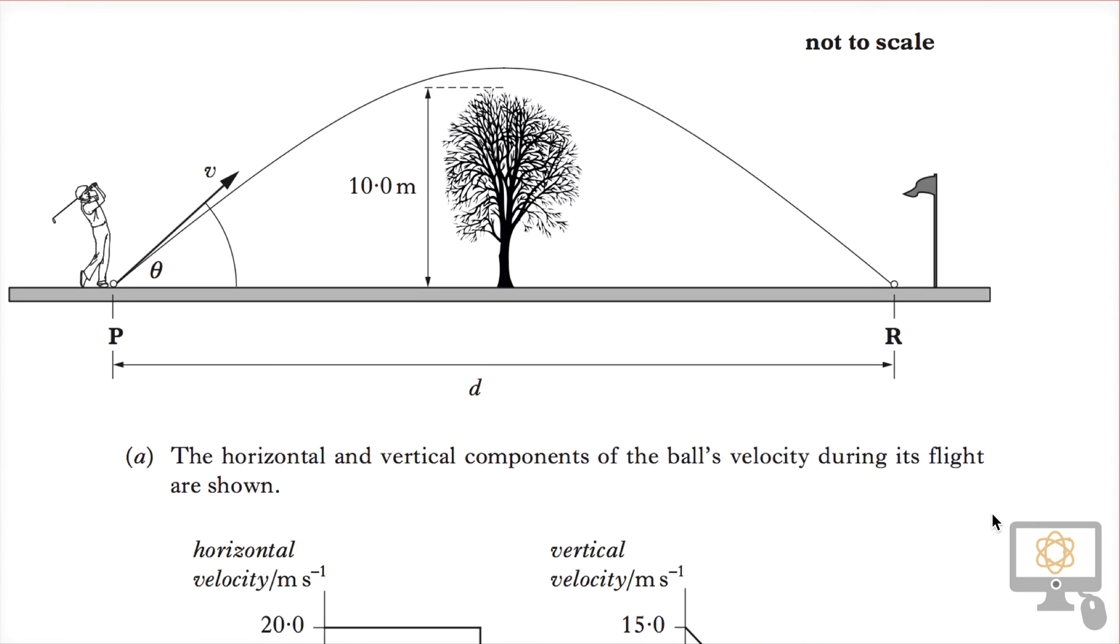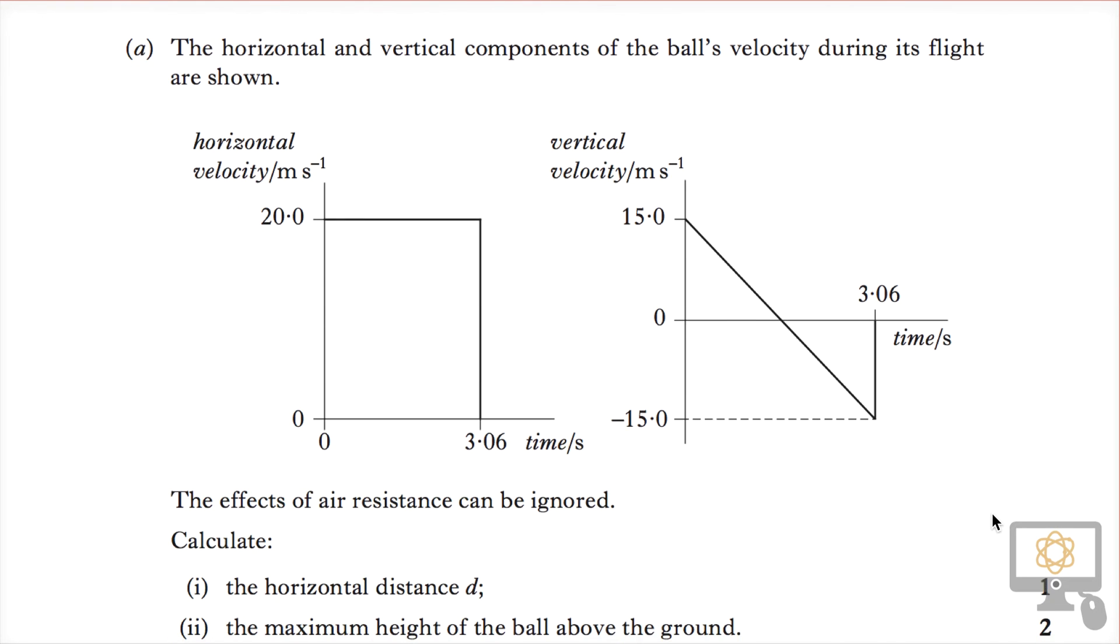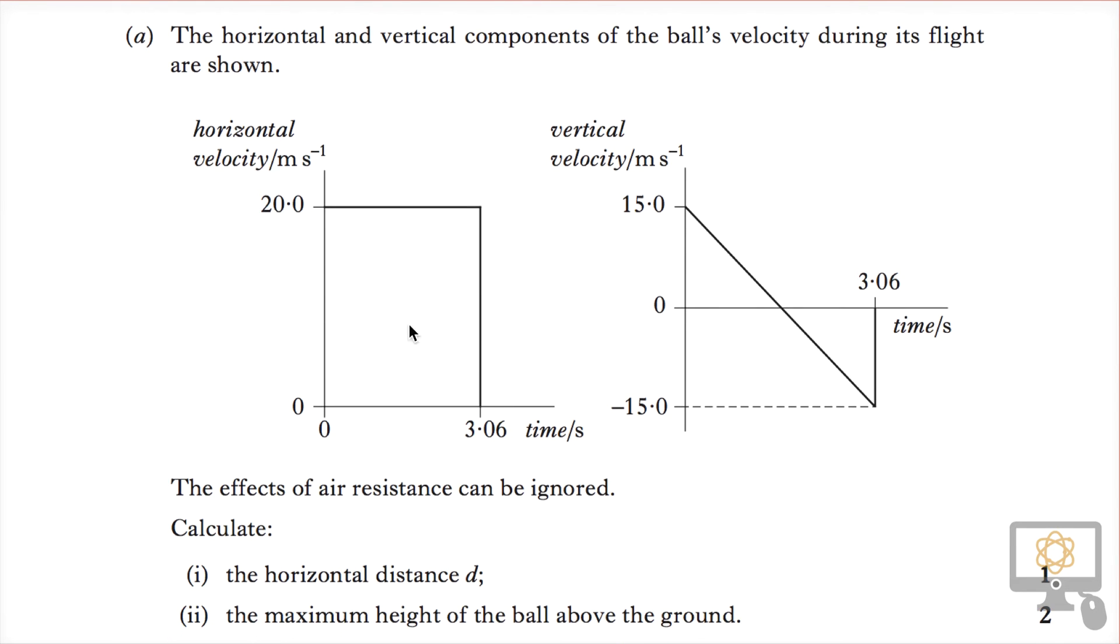The horizontal and vertical components of the ball's velocity during the flight are shown, and this is what's of interest to us in part A1. The horizontal velocity is 20 and that horizontal velocity component does not change throughout the flight which lasts for a duration of 3.06 seconds.